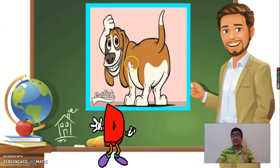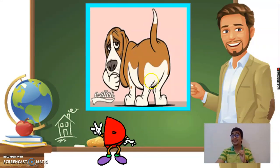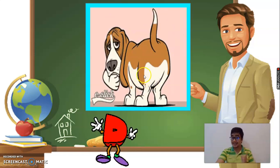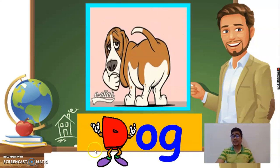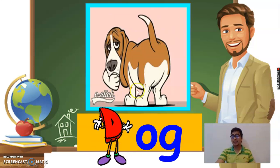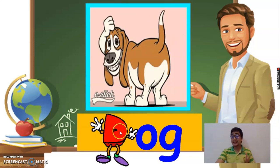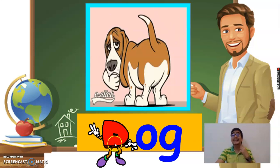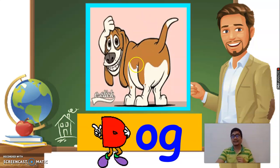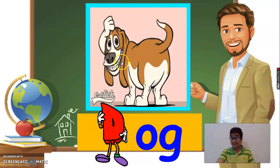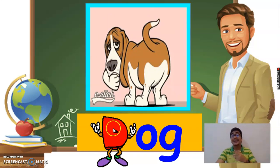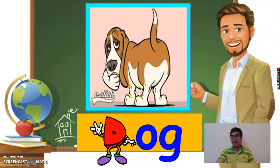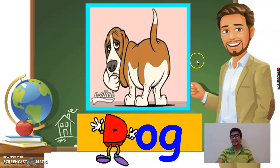Next, we have... What is it? It's a dog. Dog begins with the letter D. Again, letter D. Very good. What is it? It's a dog.